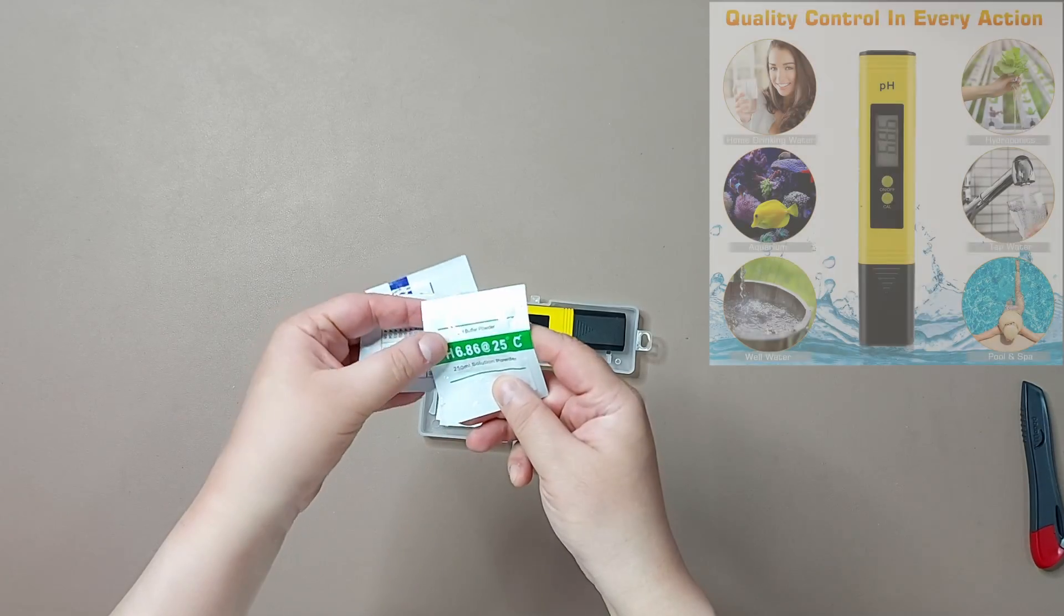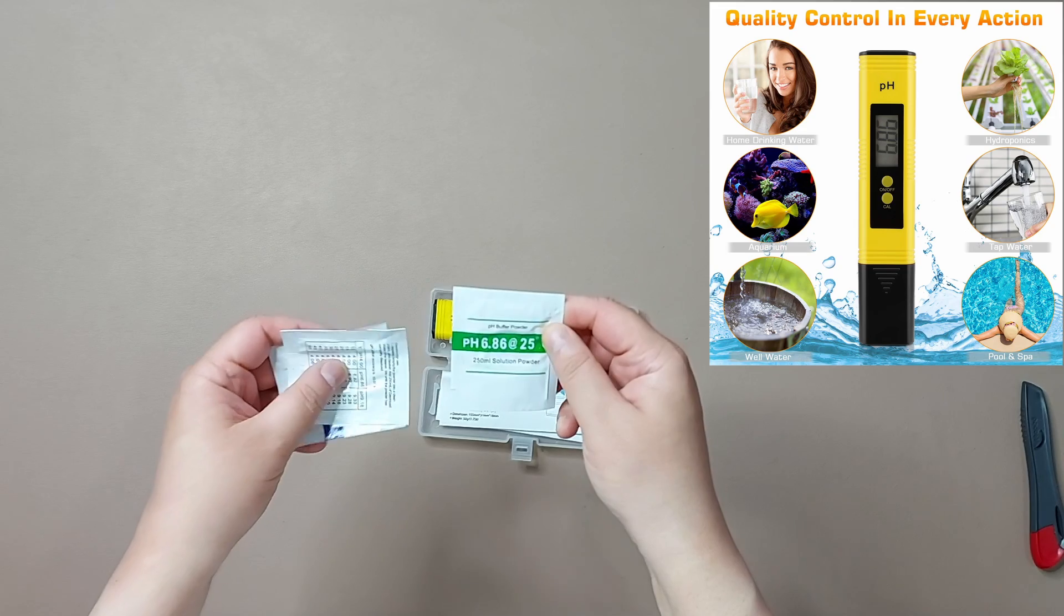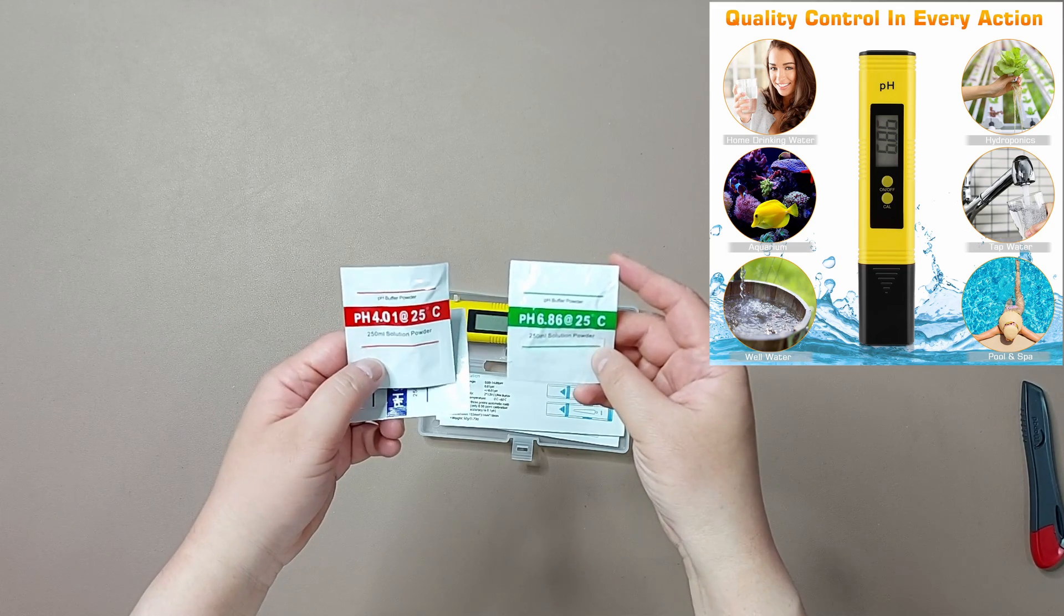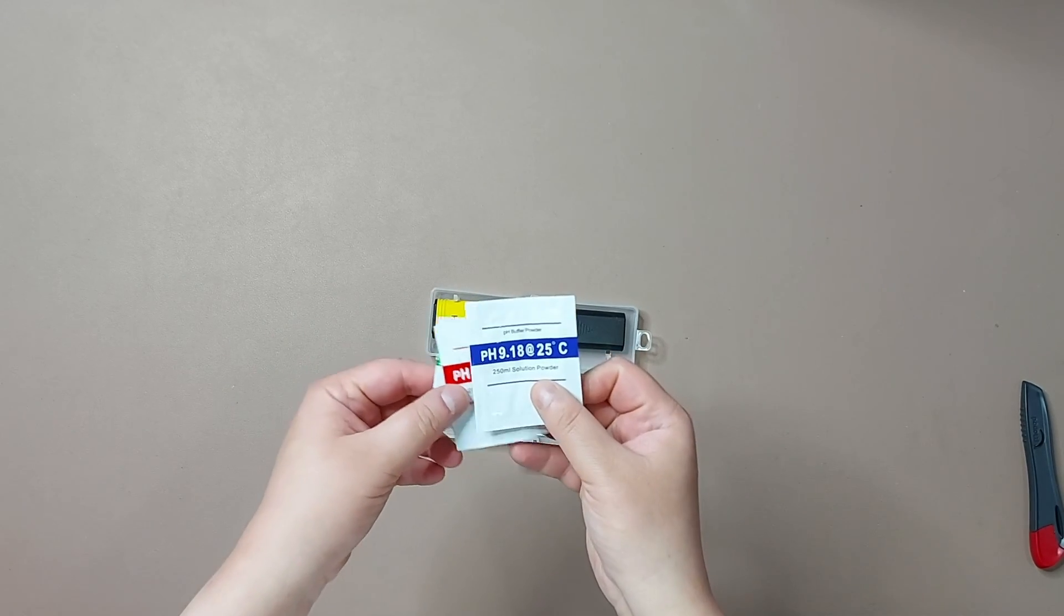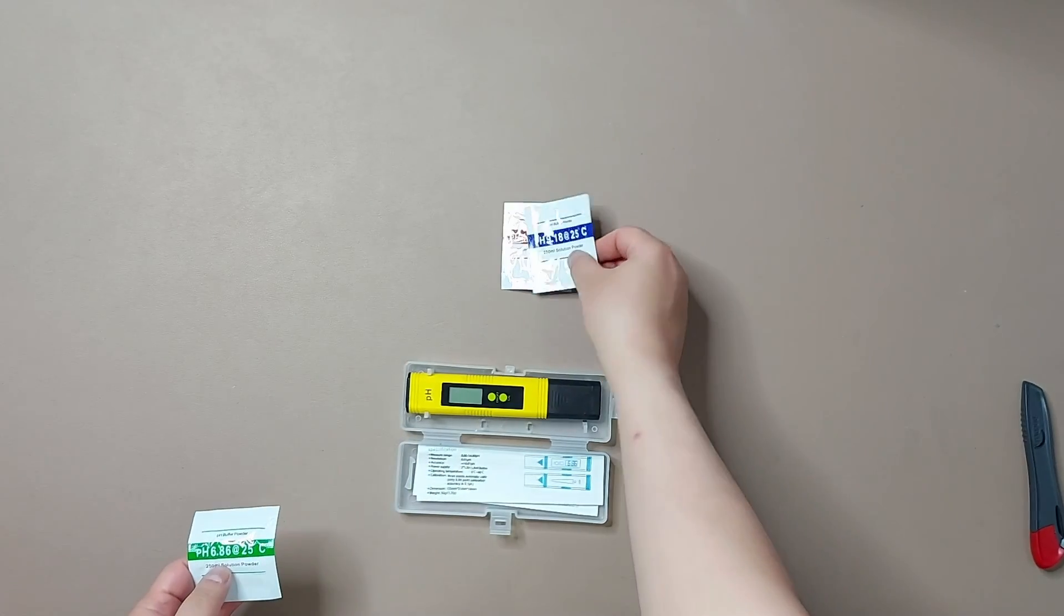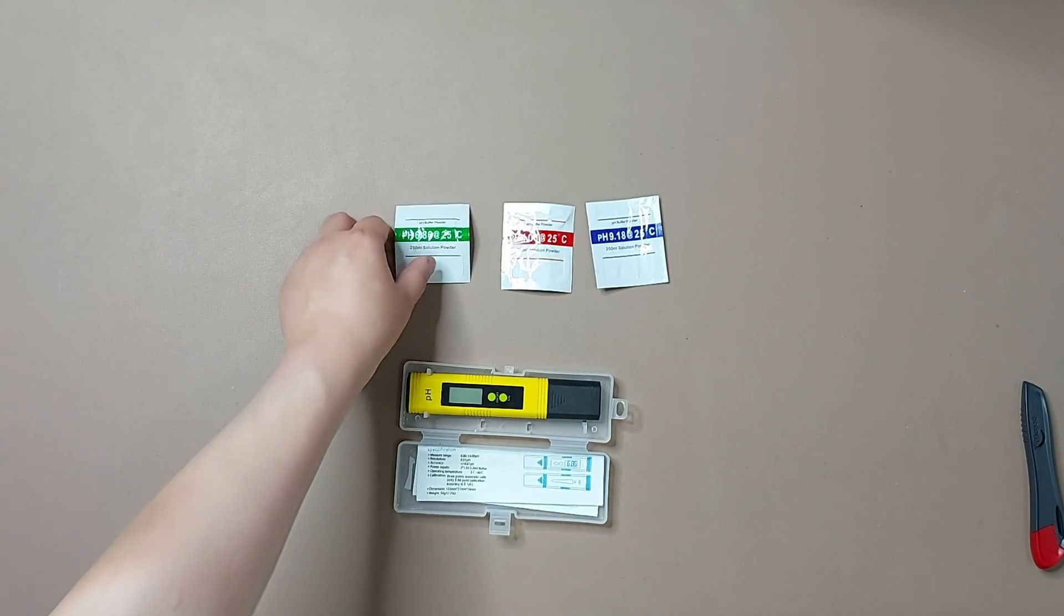We have here solution powder. This is pH 6.86, pH 4.01, and pH 9.18. Let's put these here and figure out what they do.